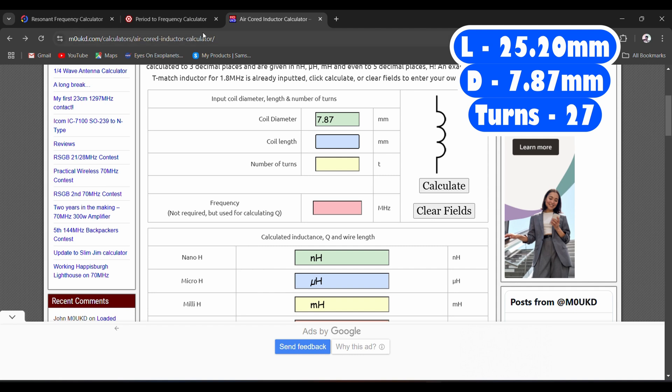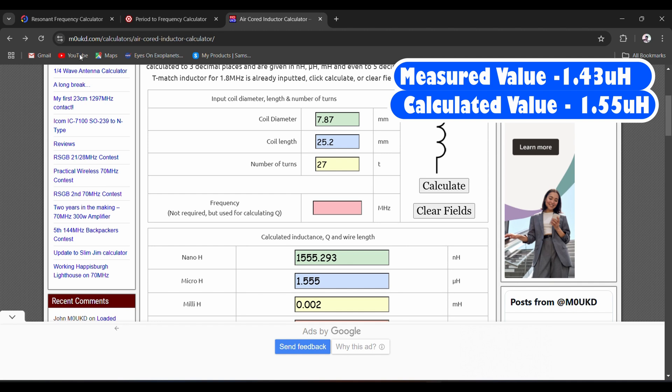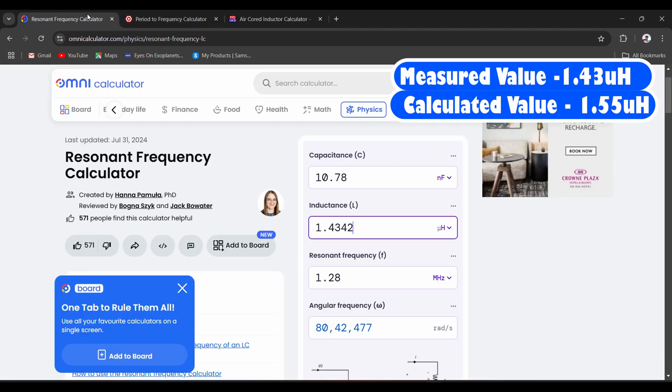So this is the website. I will give all the links in the description. So 7.87 coil diameter, the length was 25.20 and 27 turns. Calculate. Okay, so the value is 1.555 microhenry. And if we see our calculation,